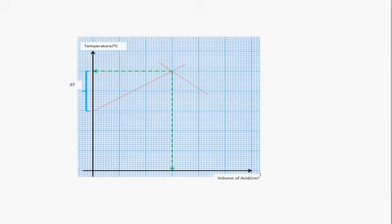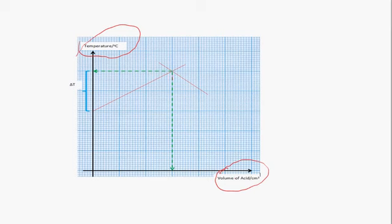When we plot the data, we end up with a graph where the x-axis shows volume of acid in cm³ and the y-axis shows temperature. The graph will initially increase, reach a maximum, and then start to decrease. The maximum point on the curve — if we drop a vertical at that point — represents the neutralization point. We can also determine the overall temperature change for the reaction by measuring the difference between the highest temperature and the initial temperature.